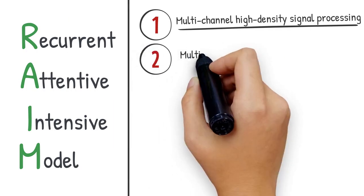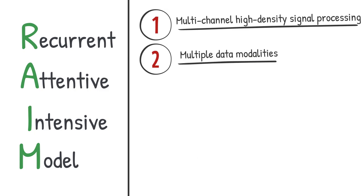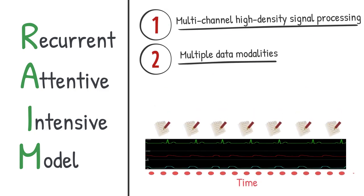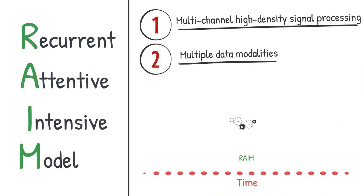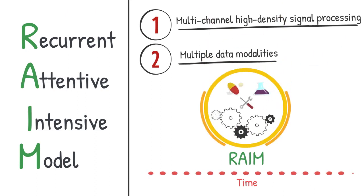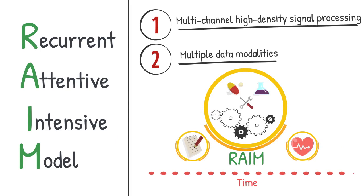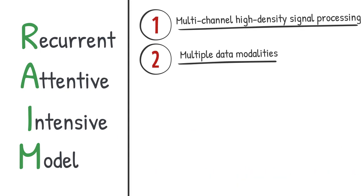Secondly, multiple data modalities. While the signals are continuously recorded, there are still discrete information that are regularly or irregularly recorded. Traditional methods align all the data into one unit by a long feature vector. This ignores the different levels of information carried in the different modalities. Instead, in REM, we utilize the records like medications and labs as guidance in modeling the patient's status on the continuous monitoring data.